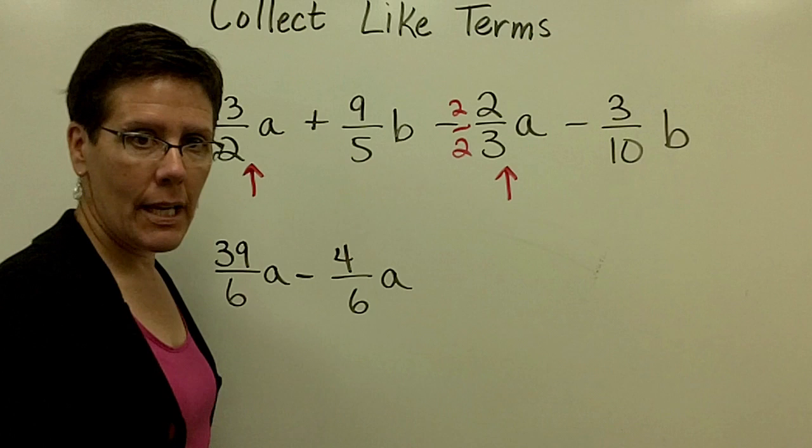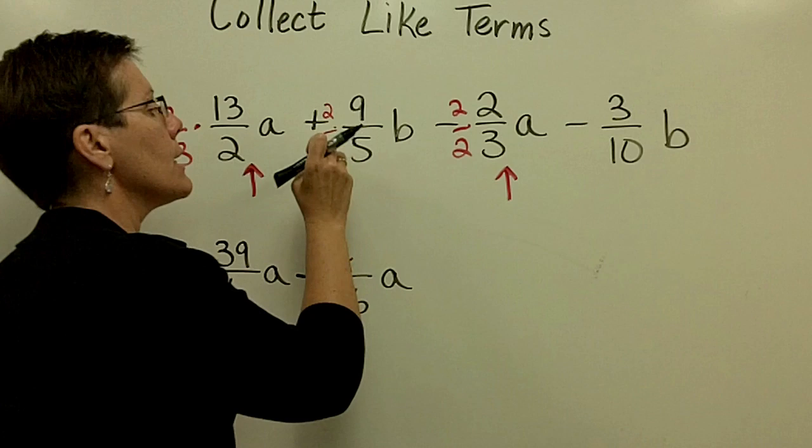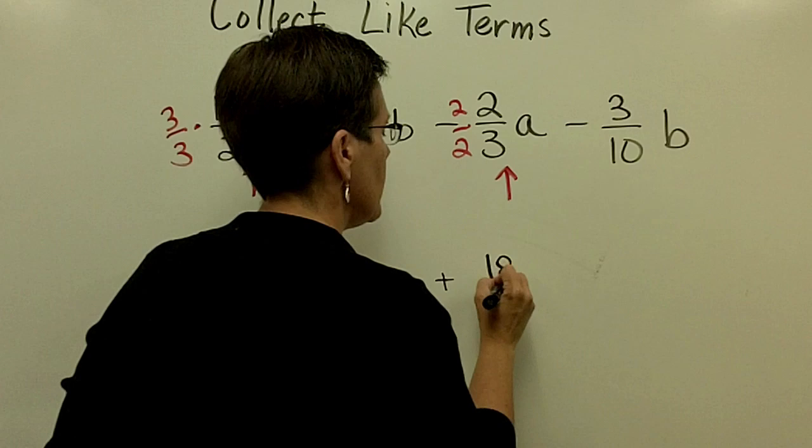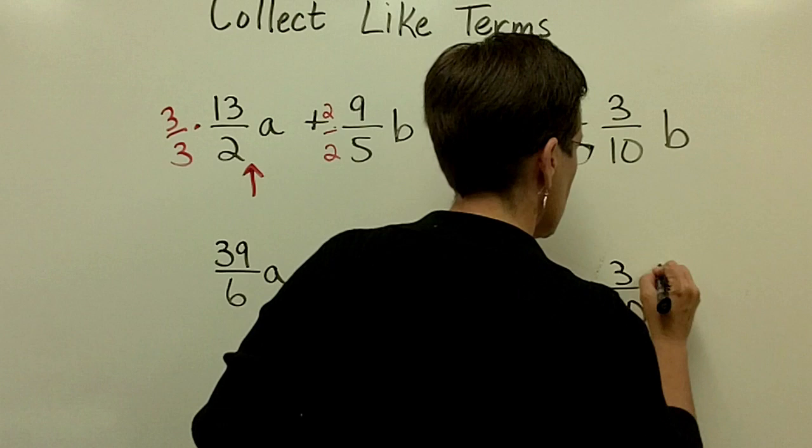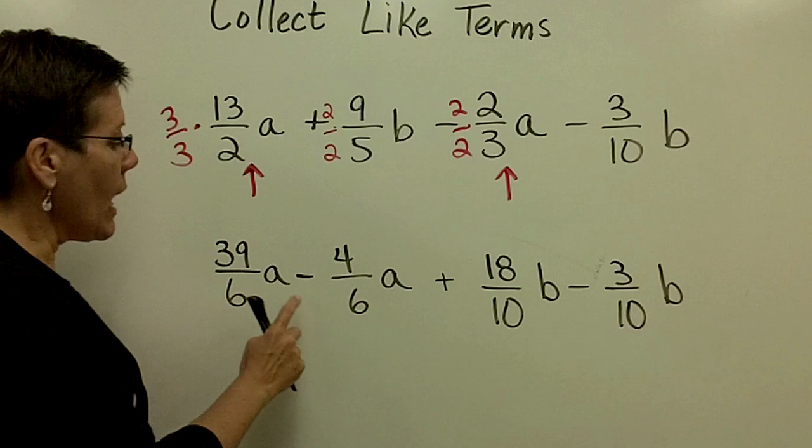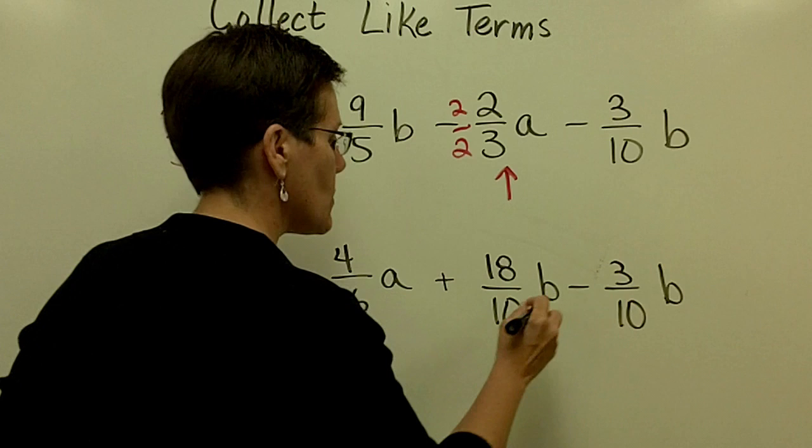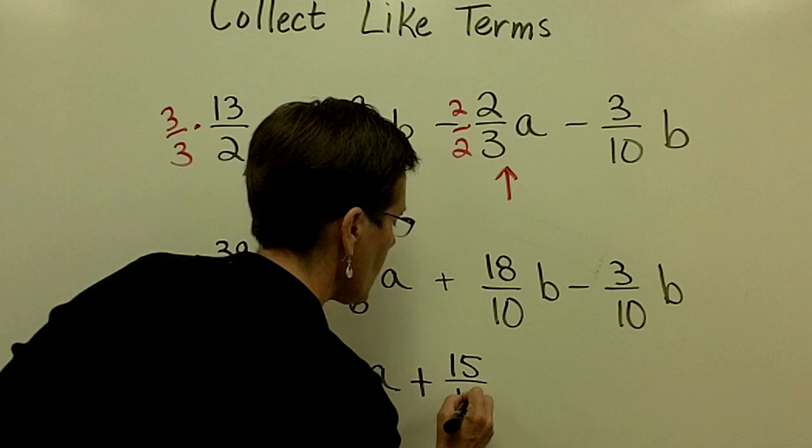This 5 and this 10 has a common denominator of 10. So this 9 fifths needs to be multiplied by 2 on top and 2 on the bottom to make that become a 10. 2 times 9 is 18 tenths b. And then I have the 3 tenths b. And I am ready to now combine my like terms because I've gotten common denominators. I will subtract their numerators. So 39 minus 4 is 35 over 6a. 18 minus 3 is a positive 15 over 10b. And finally, I'm just going to remind you that you should reduce this.